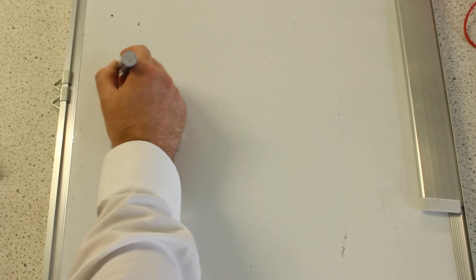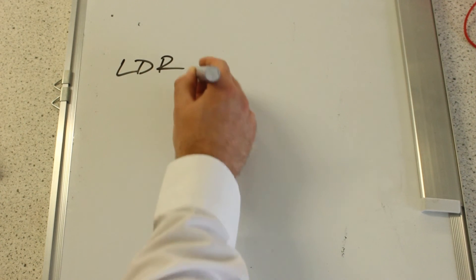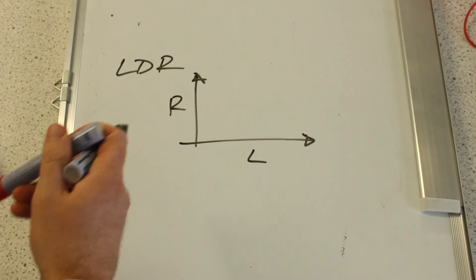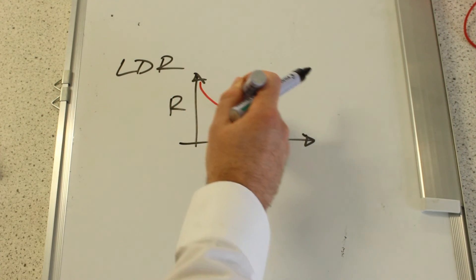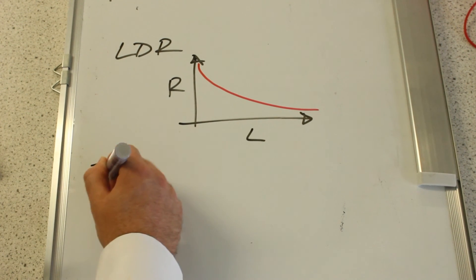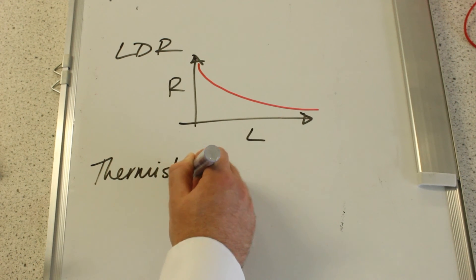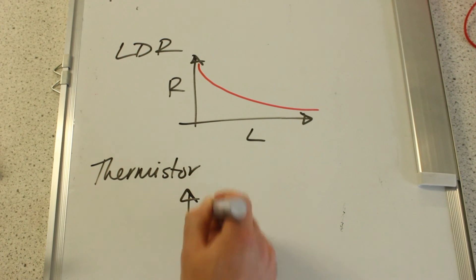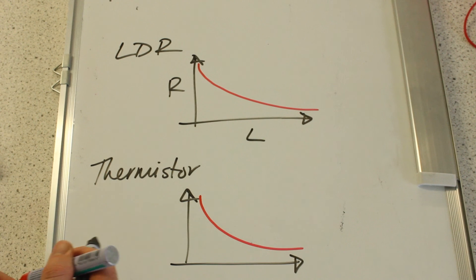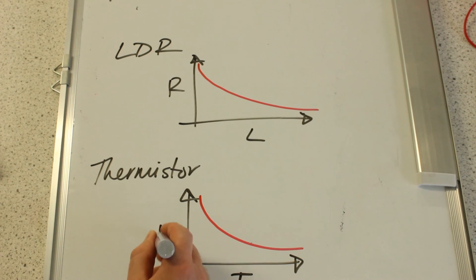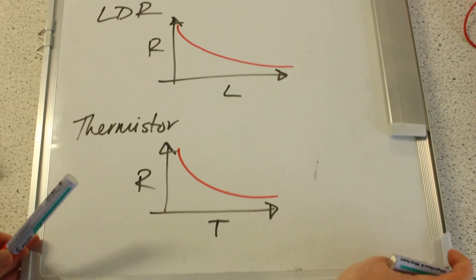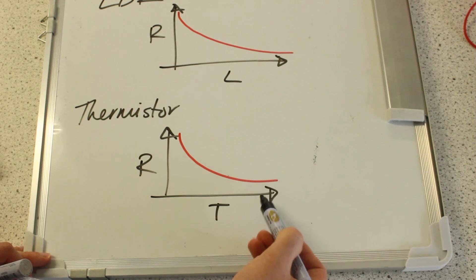So just remember, a light dependent resistor has a lower resistance when it is brighter. A thermistor has a lower resistance when it is hotter, so at a higher temperature the resistance is lower.